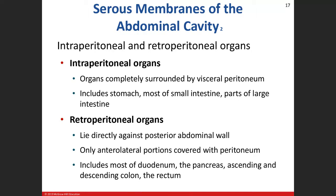Intraperitoneal organs are covered by the visceral peritoneum — stomach, most of the small intestine, the cecum, transverse colon, and sigmoid colon. Retroperitoneal organs sit directly on the posterior abdominal wall — retro means behind. Examples include the kidneys, duodenum, pancreas, ascending and descending colon, and rectum. Parts of retroperitoneal organs visible from the front and side are usually covered by the peritoneum.